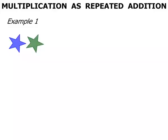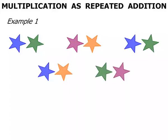In this lesson we take a look at Multiplication as Repeated Addition. Example 1. Start off with 2 stars, another 2 stars, 2 more stars, another 2, and finally another 2 stars. So as an addition, we've got 2 plus 2 plus 2 plus 2 plus 2.